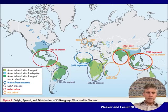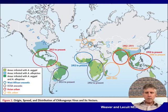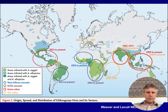The biggest outbreak occurred when the virus spread to the Western Hemisphere. It probably arose in the Caribbean, possibly in St. Martin, and then spread very rapidly throughout the Caribbean, Central America, and South America, leading to a very large burden of cases.